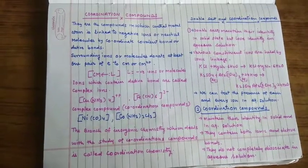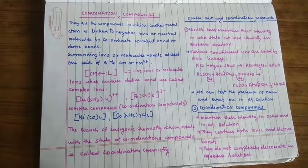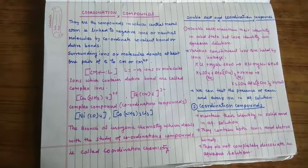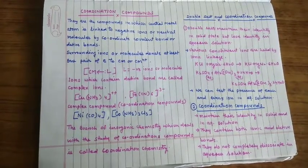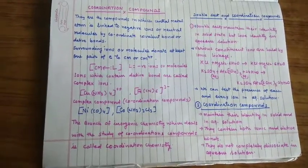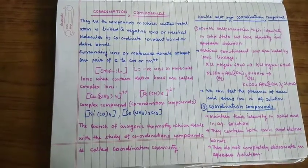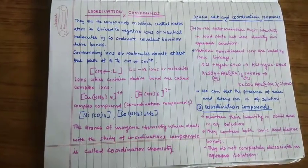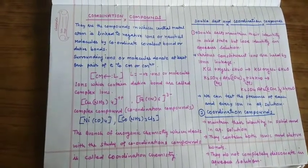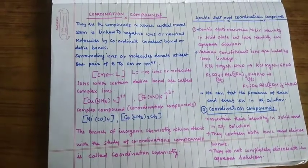So let us see. Double salts maintain their identity in solid state but lose their identity in aqueous solution. Various constituent ions are held by ionic linkage. So this means that when they are put in aqueous solution they completely dissociate into their constituent ions because these ions are held in double salt by ionic linkage. They are held by ionic bond.